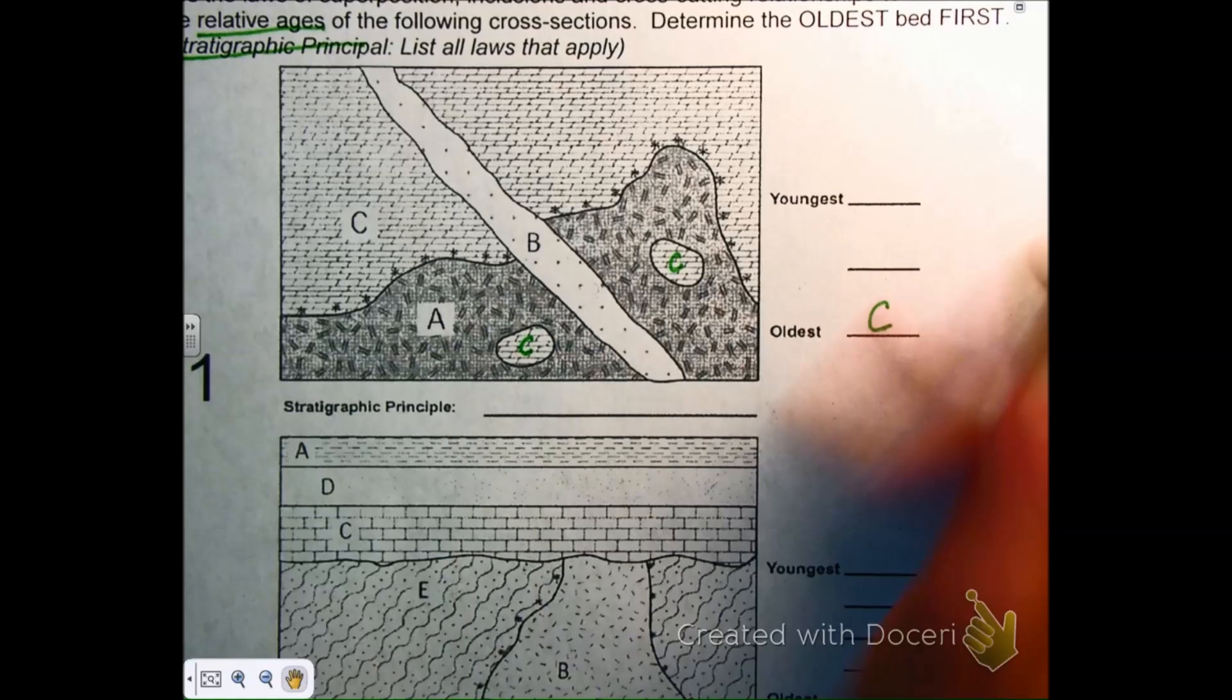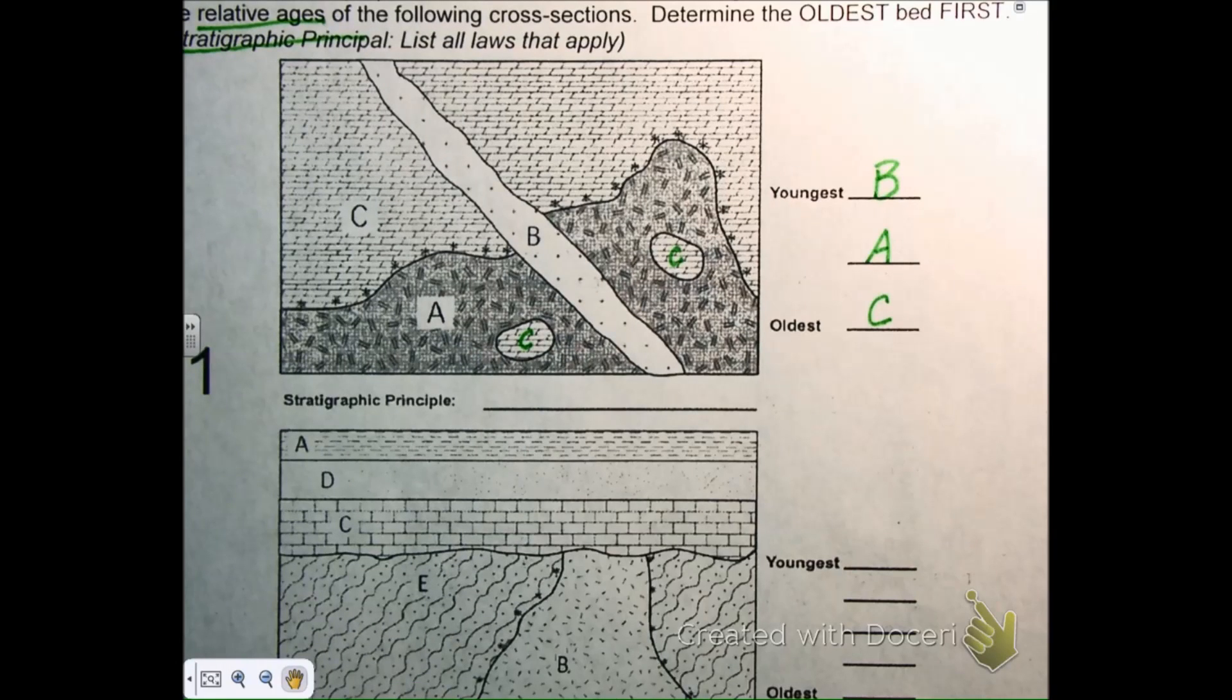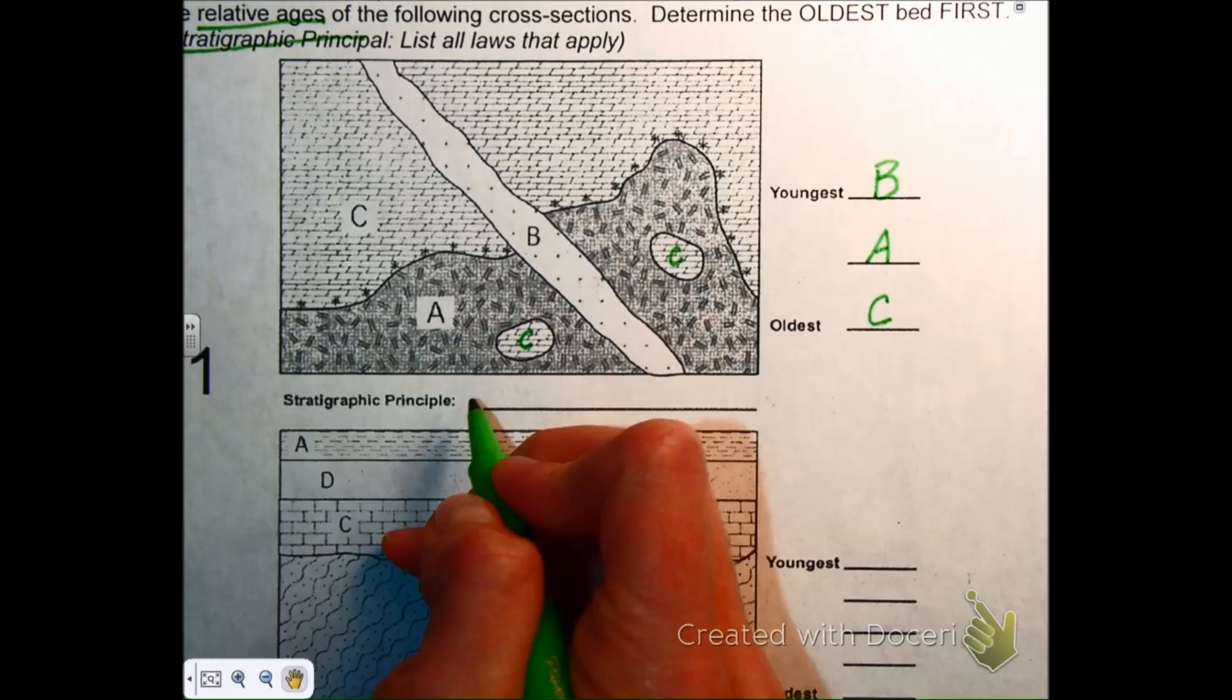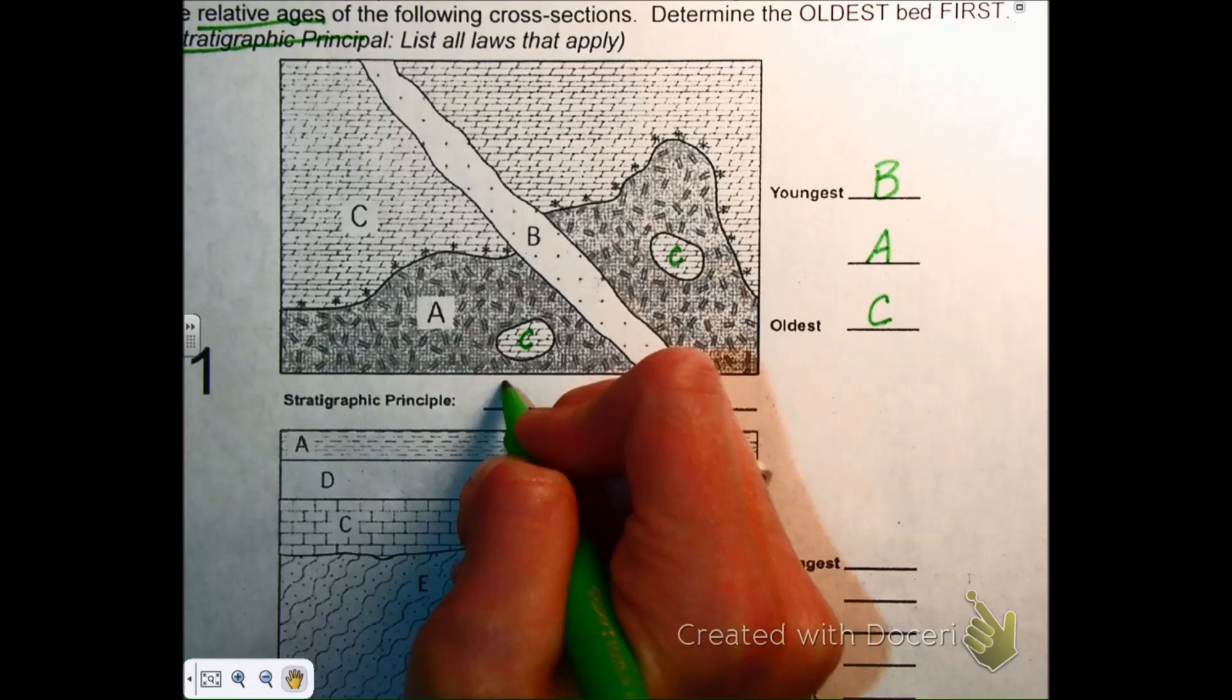So we should have B as the youngest, A, and then C as the oldest. What stratigraphic principles or laws did we use here? Jenna, give me one law we used here. Law of inclusion. Okay, the law of inclusion. That's how we determined our oldest rock.